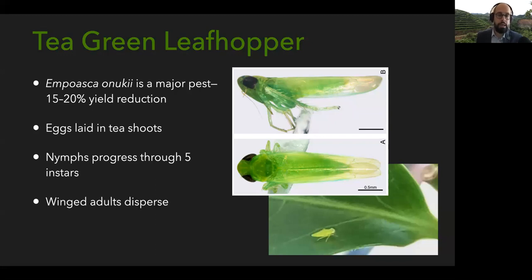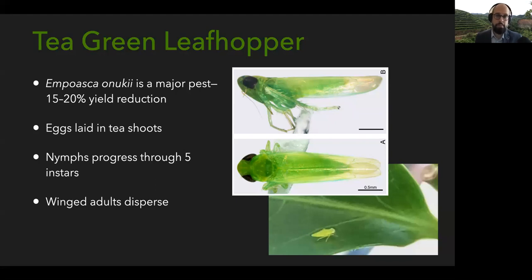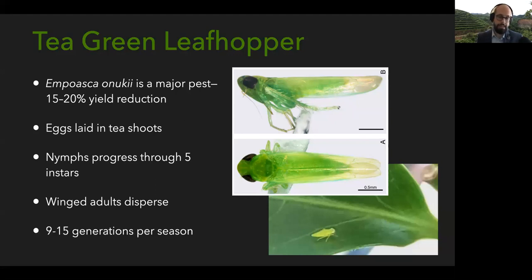These winged adults can then disperse. The nymphs, even though they don't have wings, move around quite a bit — they can jump, hence the name leafhopper — and they're actually quite active and hard to catch. They reproduce very quickly and can get up to 15 generations per summer, so they have a huge potential for their population numbers to increase.